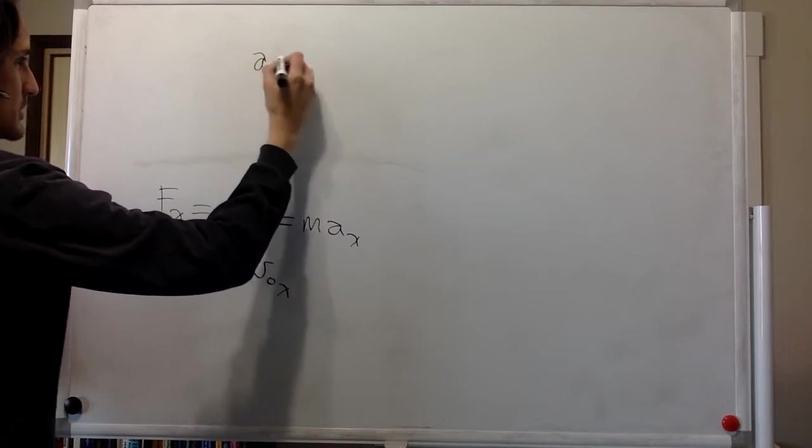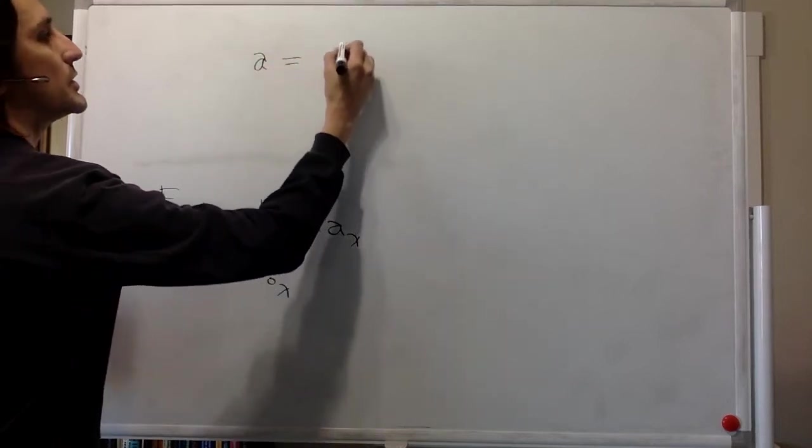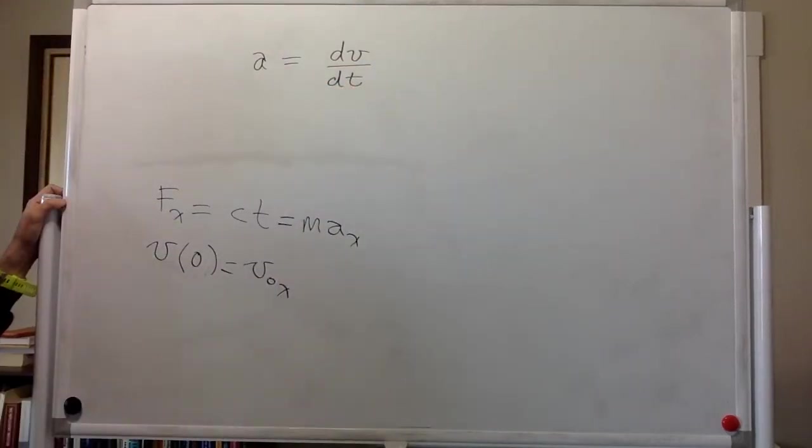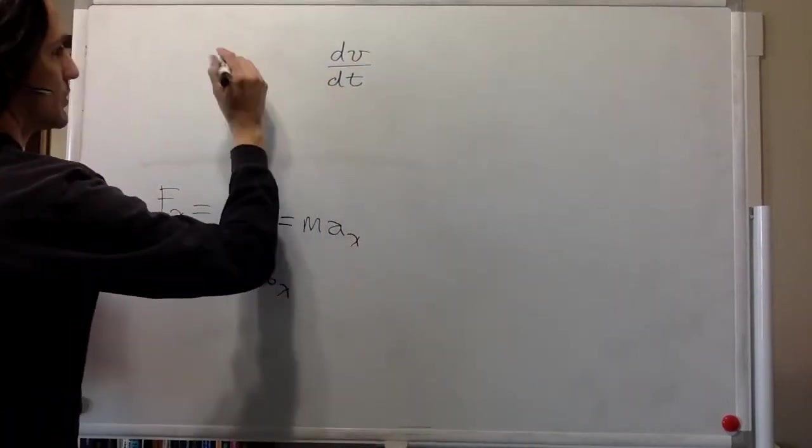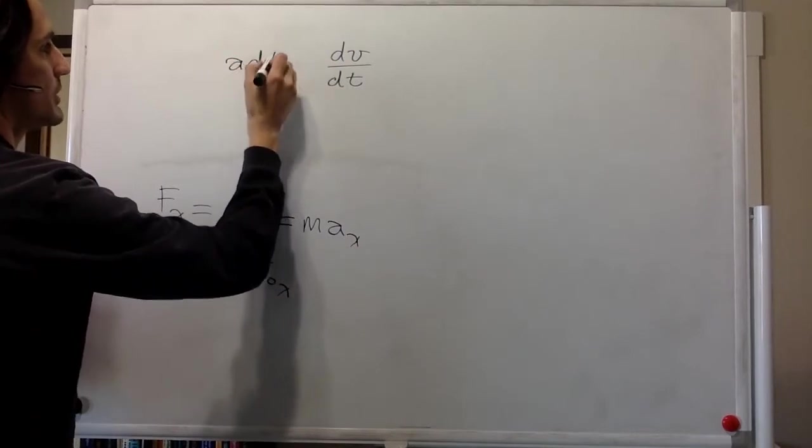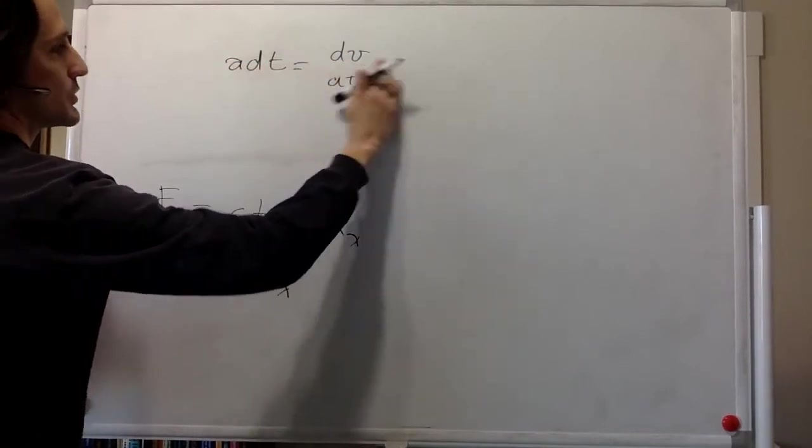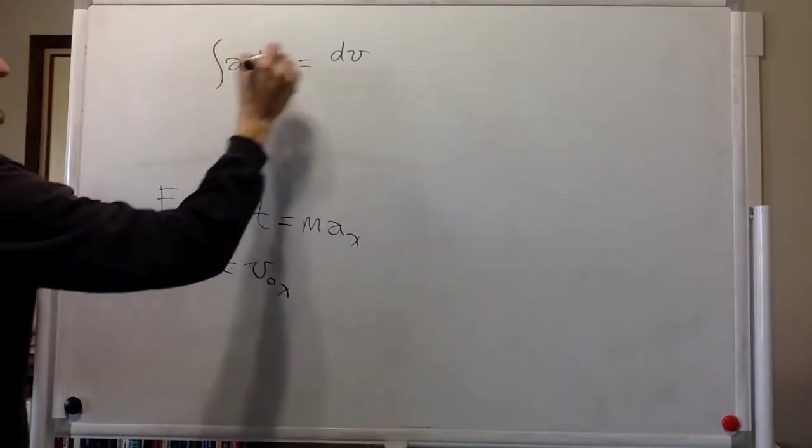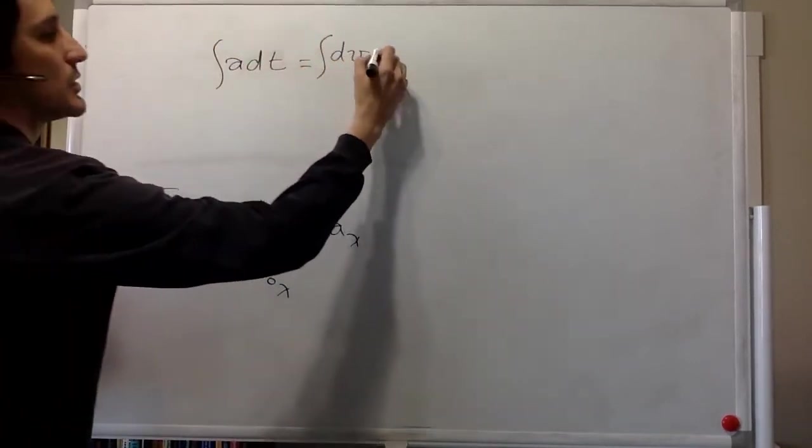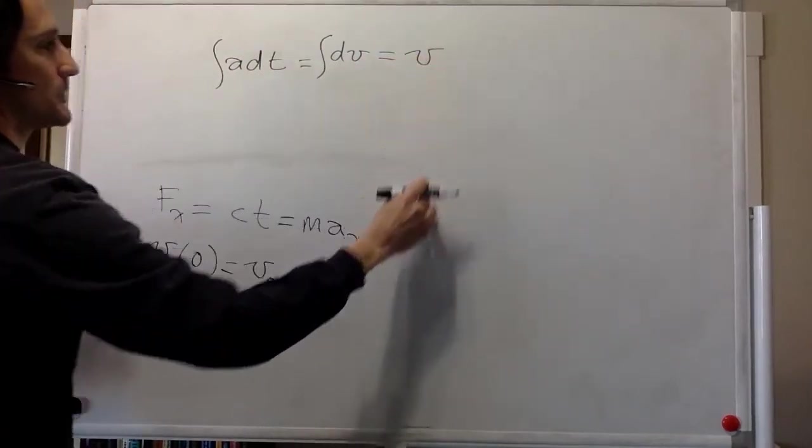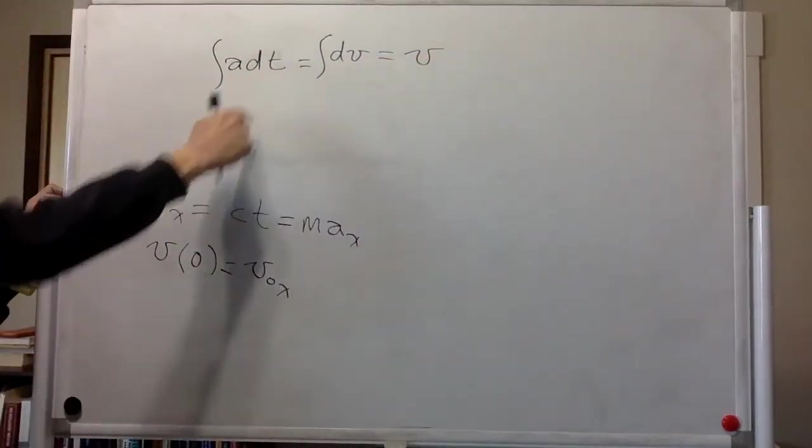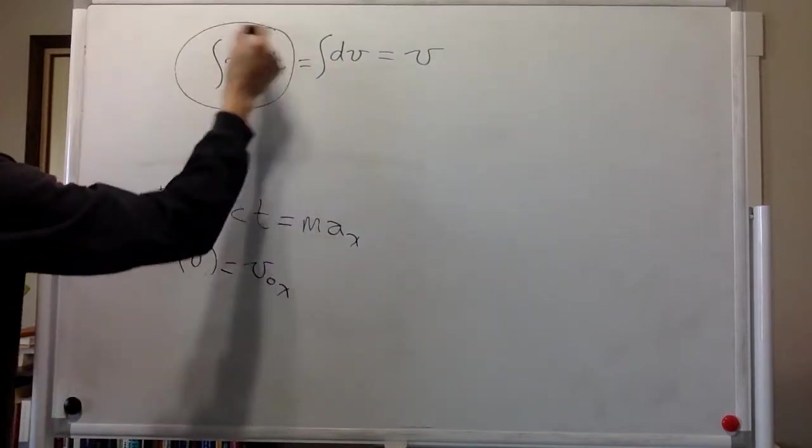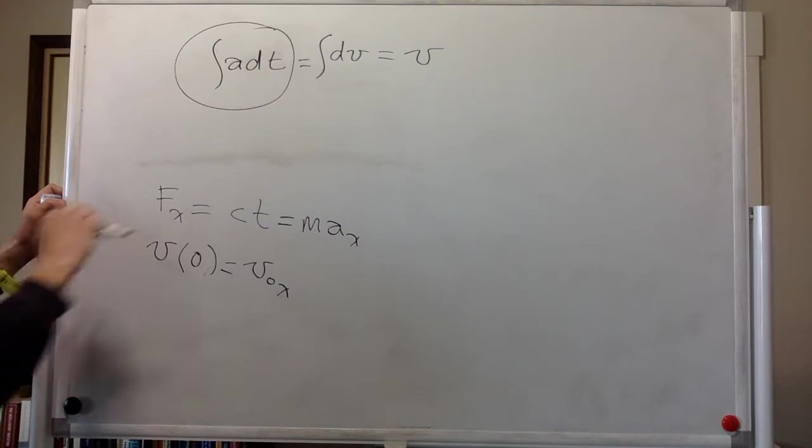The acceleration is the derivative with respect to time of the velocity. So we can move the dt over here, and that's equal to dv. So if we integrate on both sides, we get the velocity on this side as a function of time, which is what we want. So what we have to do is solve that integral.